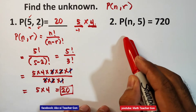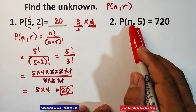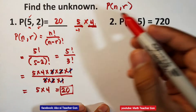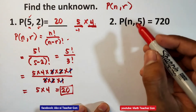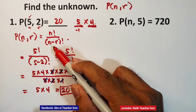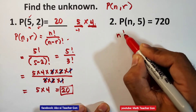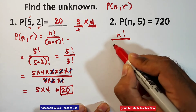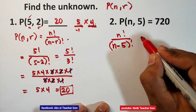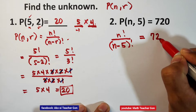Let us have item number 2. The missing number is n — what if we have to find n? Using the formula, permutation of n taken r equals n factorial all over n minus r factorial. Since r is equal to 5, this becomes n factorial all over n minus 5 factorial, and that is equal to 720.